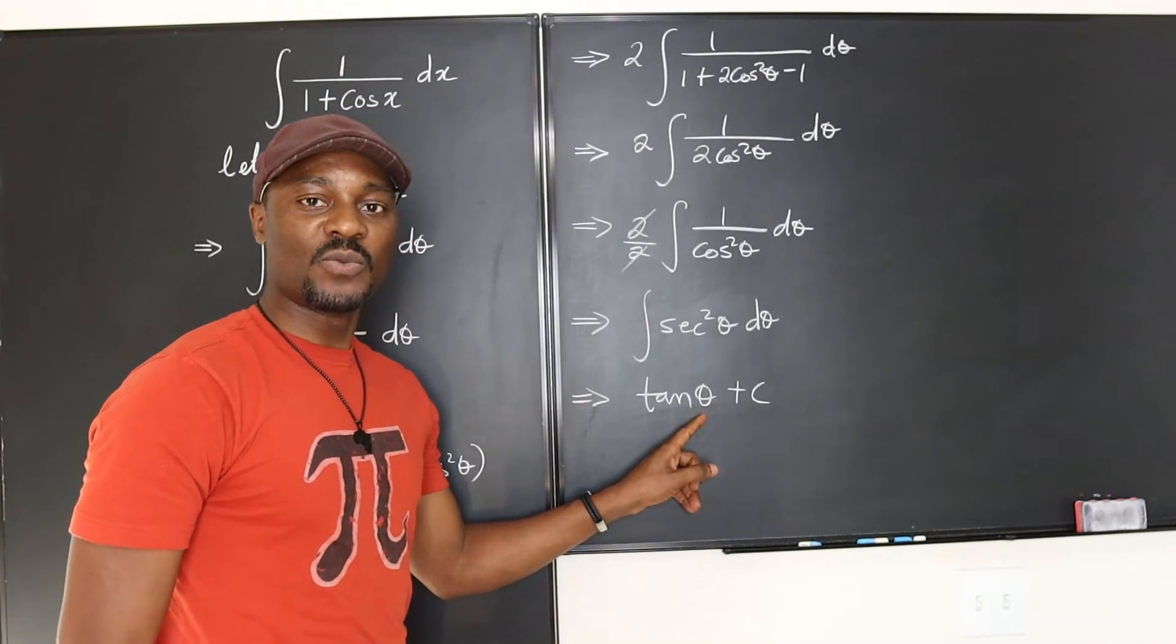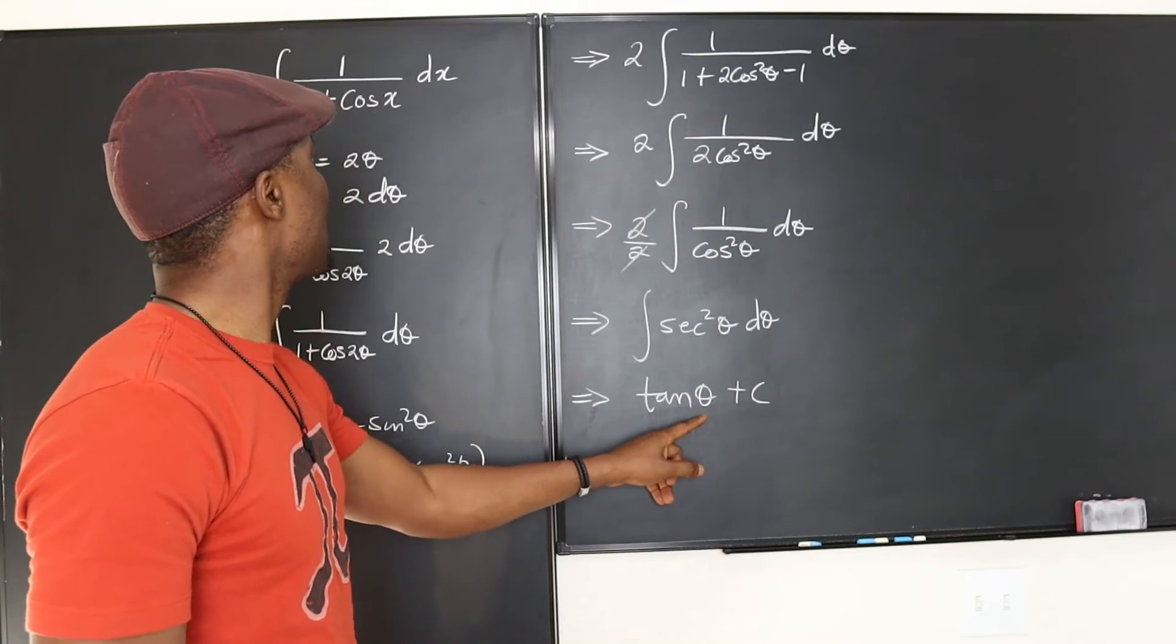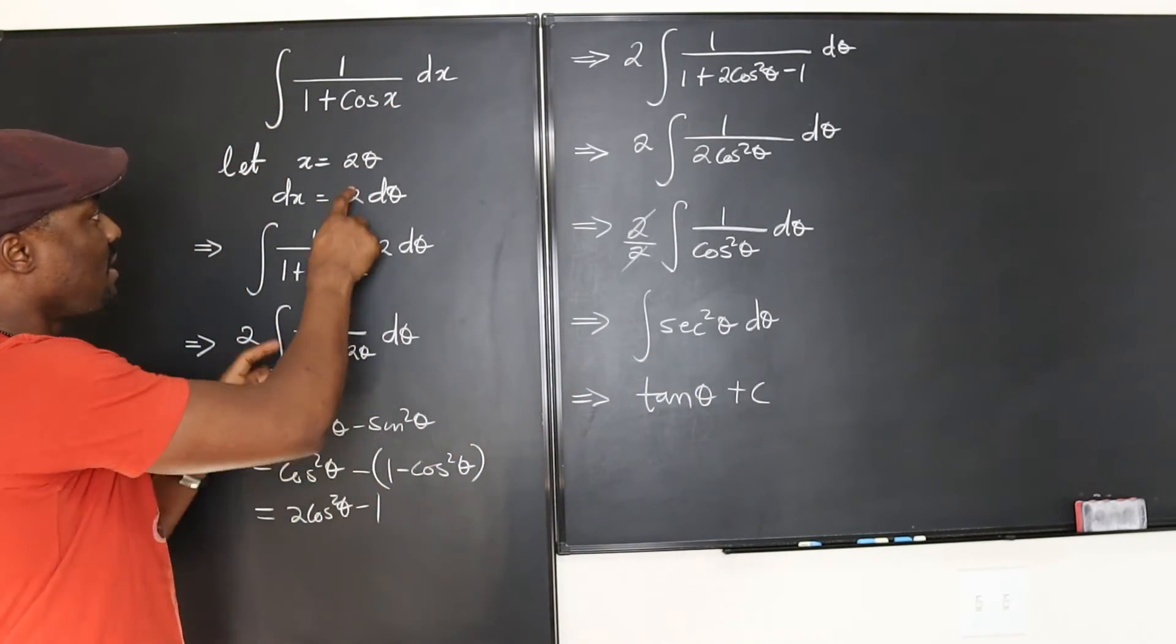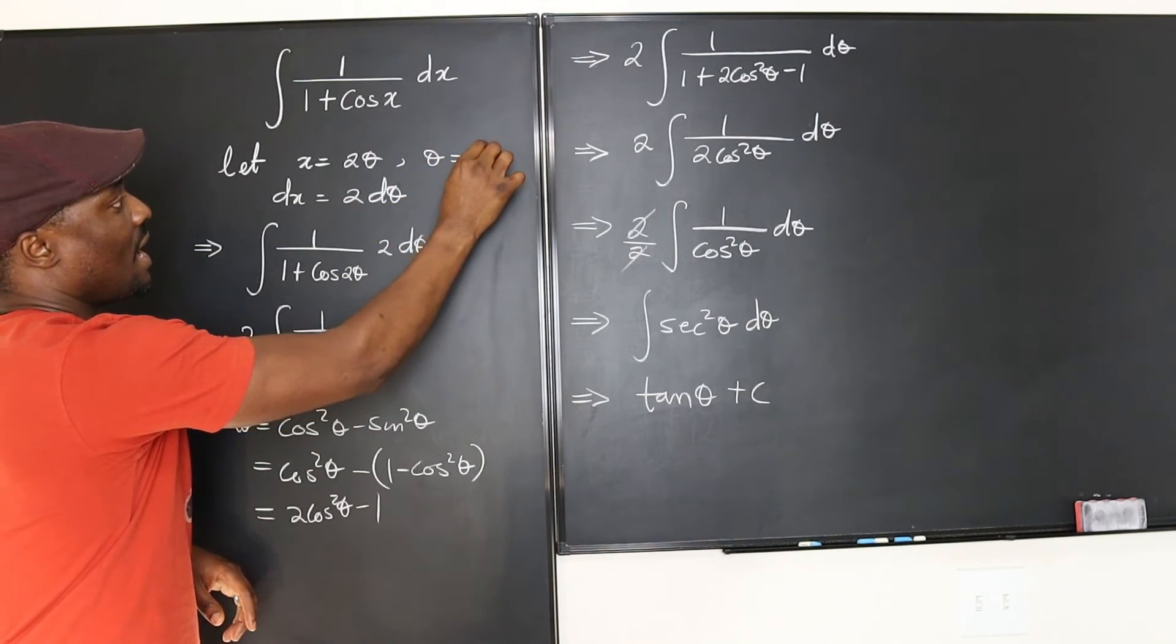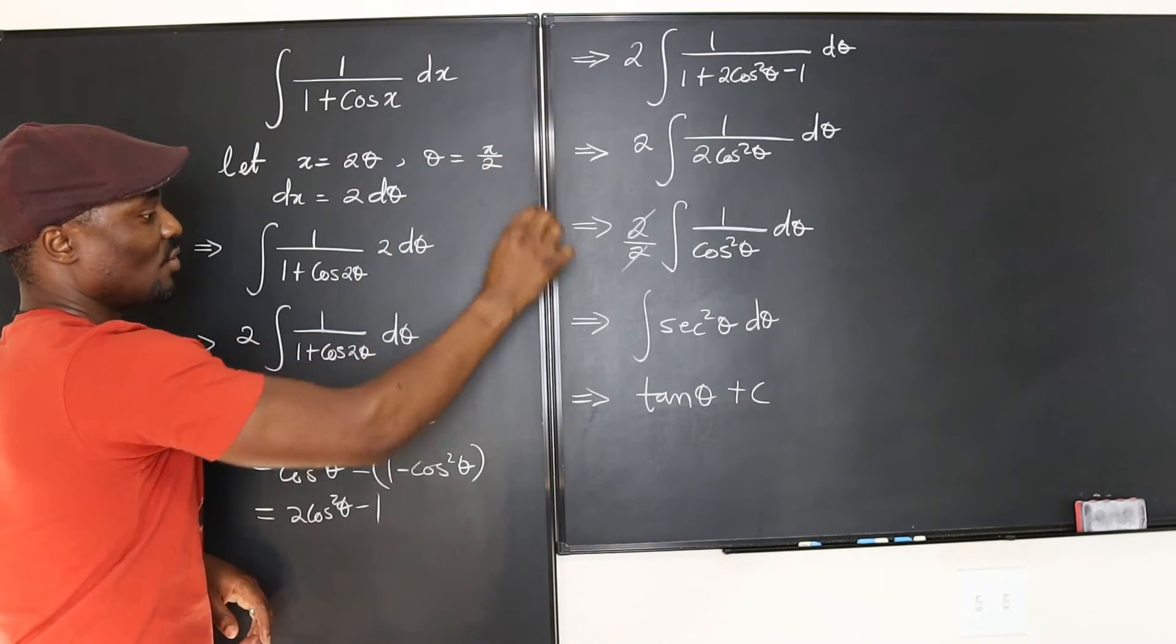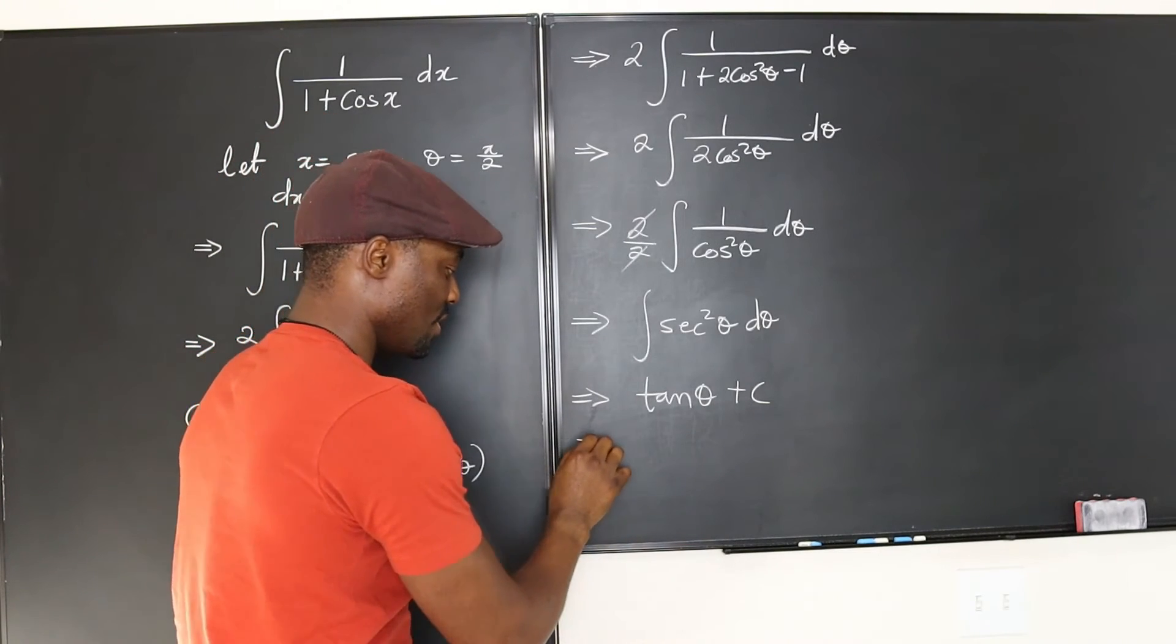But the question wasn't about theta. The question was about x. So what is theta? Theta is x over 2. So we're just going to come here and replace this.